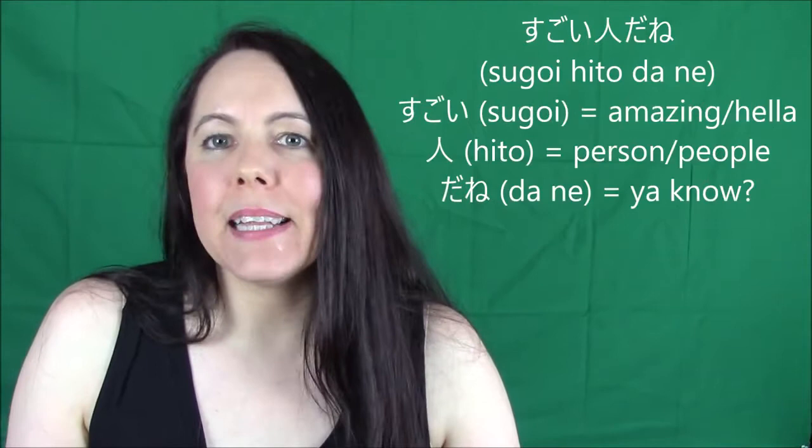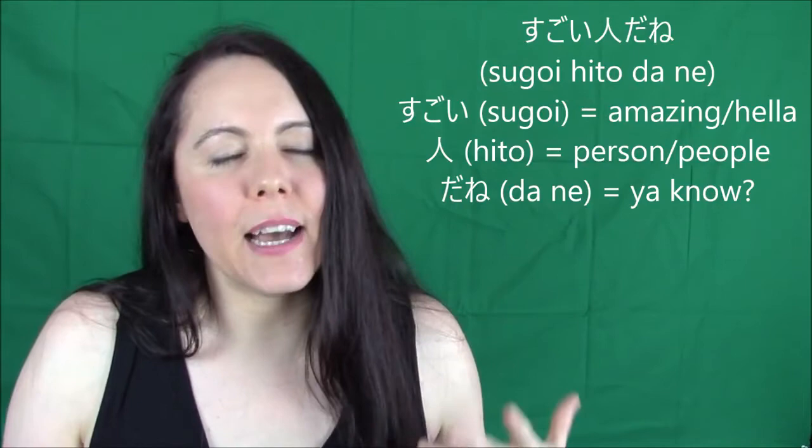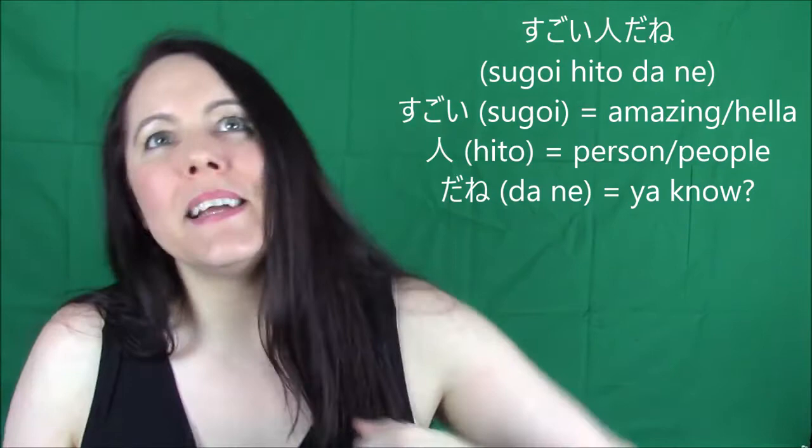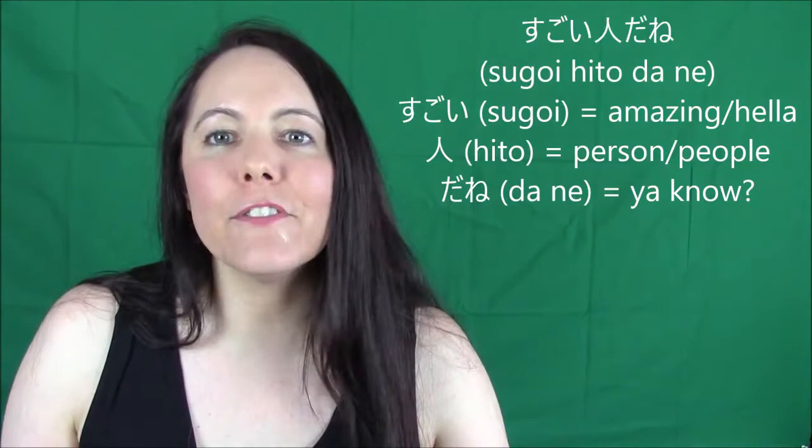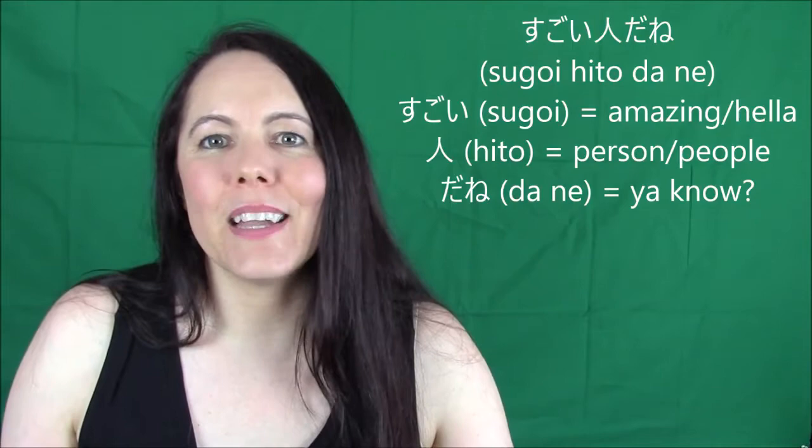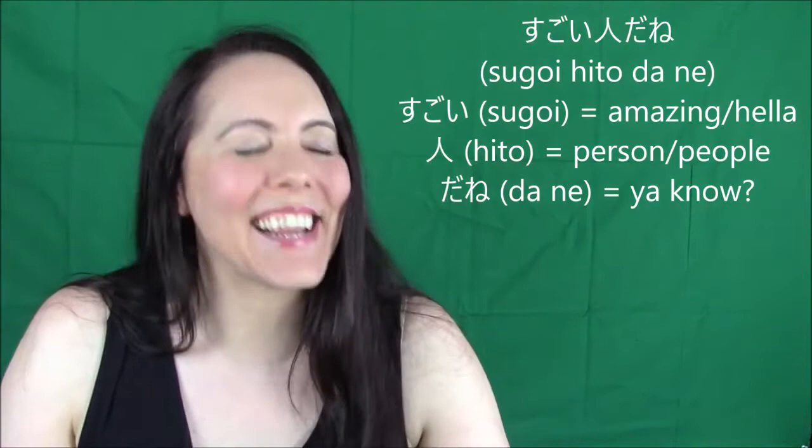Now we're away from the villains for a moment. Usagi says 'sugoi hito da ne.' 'Sugoi' means amazing, but used this way — 'sugoi hito da ne' — it doesn't mean 'what an amazing person.' It means 'wow, it's so crowded here.' It's kind of like 'hella' in that sense — 'there's hella people here.' So 'sugoi' is functioning like 'a lot' — 'look at all the people here.'